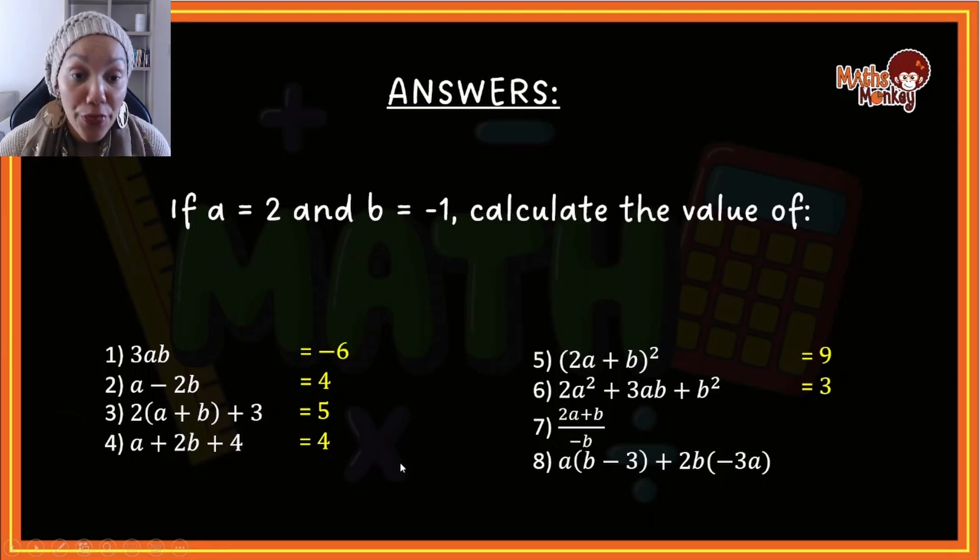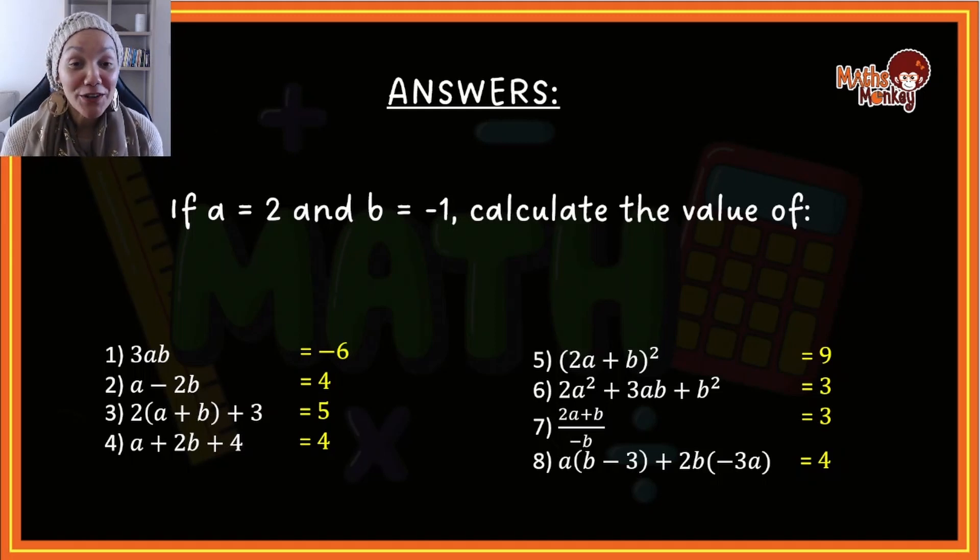Number seven, your answer is also three. And then the last question, your answer is four. Alright, so hopefully you did well and hopefully you understand this work, and you can actually nail all your substitution questions.